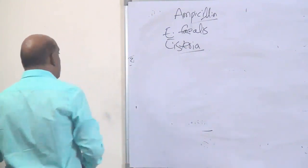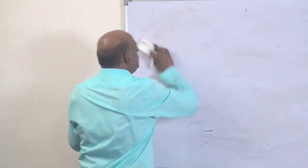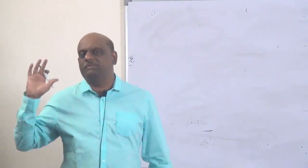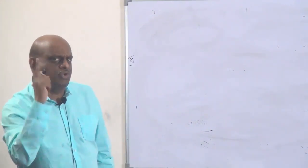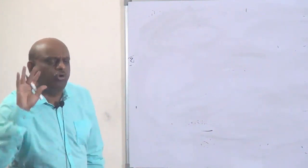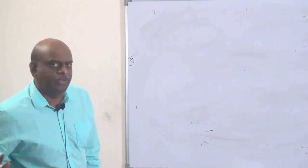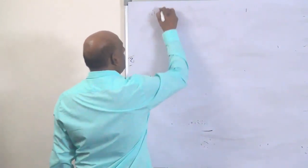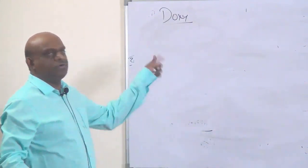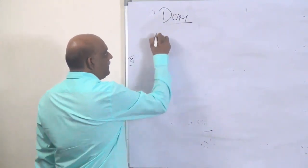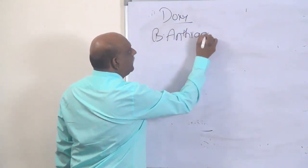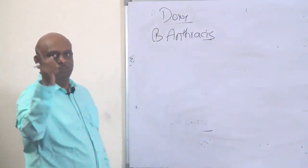Now comes doxycycline — another very sensitive, fine question by the examiner. There are four organisms where doxycycline is the drug of choice. First: bacillus anthracis — in anthrax, use doxy.